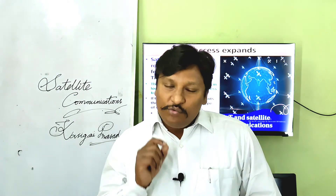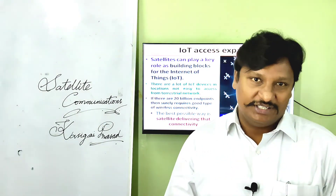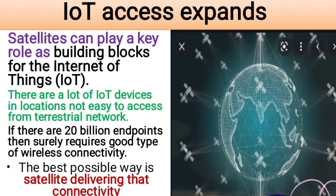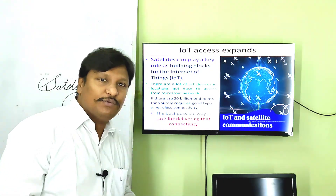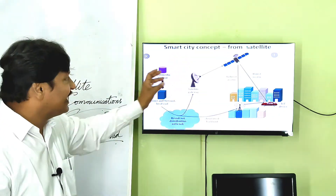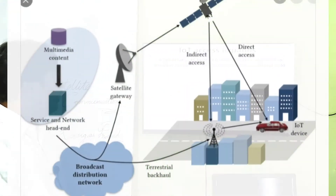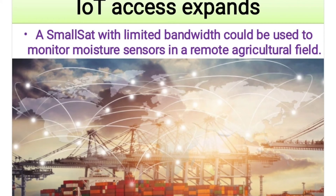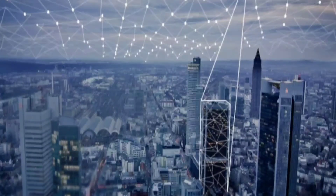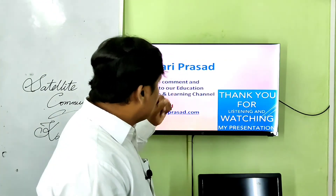Another important future trend is the implementation of IoT — Internet of Things. Satellites can play a key role as building blocks for the Internet of Things. There are many IoT devices in locations not easy to access from terrestrial networks; at those times, implementing satellites for IoT technologies is the best approach. One example is the smart city concept using satellites. A small satellite with limited bandwidth could be used to monitor moisture sensors in remote agricultural fields.